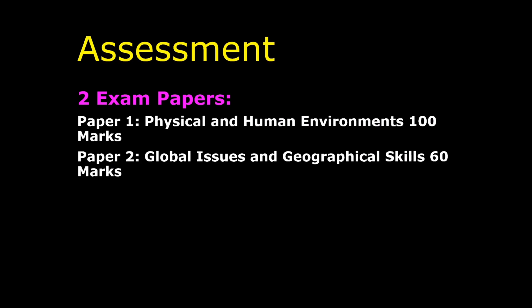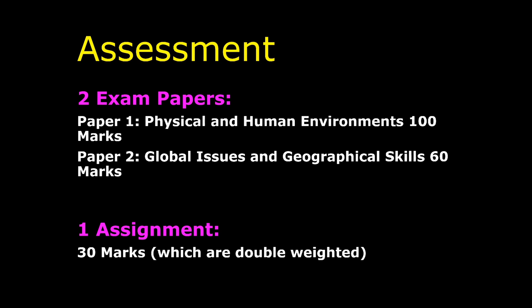There'll be more detail coming out later in terms of the times and what's involved in each question. We also have an assignment worth 30 marks, but it's double weighted. So effectively, paper one has 100 marks, but the assignment is actually worth 60 marks. It's 27% of your grade, whereas your main exam is 73% of your grade.